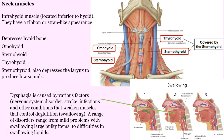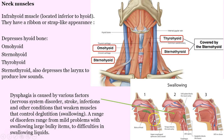Dysphagia — many people have dysphagia. It can be caused by a nervous system disorder, stroke, or infections. Sometimes just taking aspirin and falling asleep with it in your throat can cause a little scar tissue. It's a weakening of the muscles for deglutition — a good technical word for swallowing. Sometimes it's mild, like a person having a problem swallowing a large pill, but in severe cases they can't even swallow liquids. Then we have to look for alternate routes or some sort of stent device to help the passage of food.